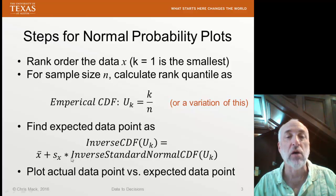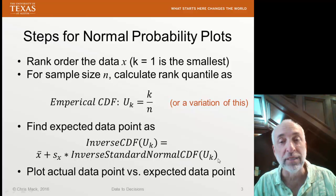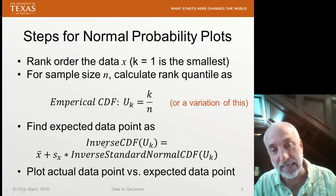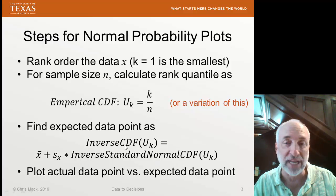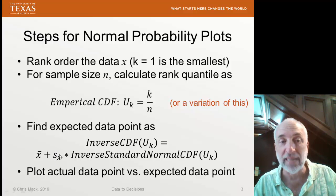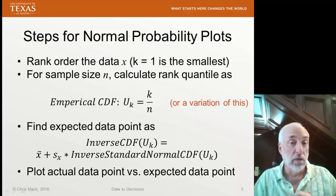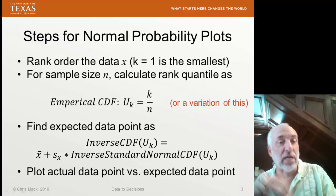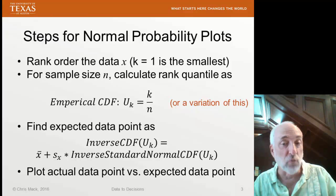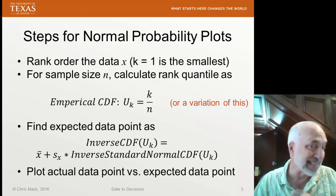Many programs like Excel have a built-in inverse standard normal CDF function. So I supply it the Uk value. I perform this function, inverse standard normal. I multiply by the standard deviation of all the X values, and then I add the mean of all the X values. So inverse standard normal has a mean of 0 and a standard deviation of 1.